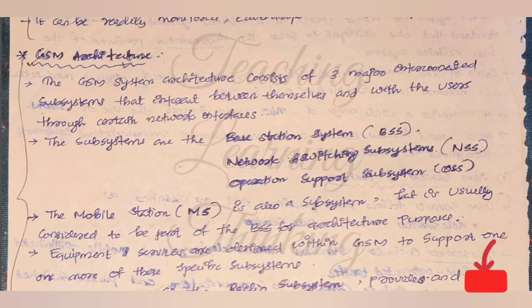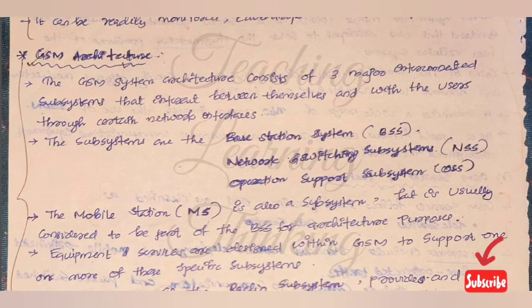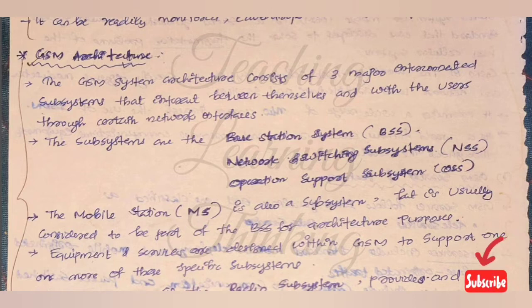The GSM system architecture consists of three major interconnected subsystems that interact between themselves and with the users through certain network interfaces. The three major subsystems are: the Base Station System (BSS), the Network Switching Subsystem (NSS), and the Operation Support Subsystem (OSS).